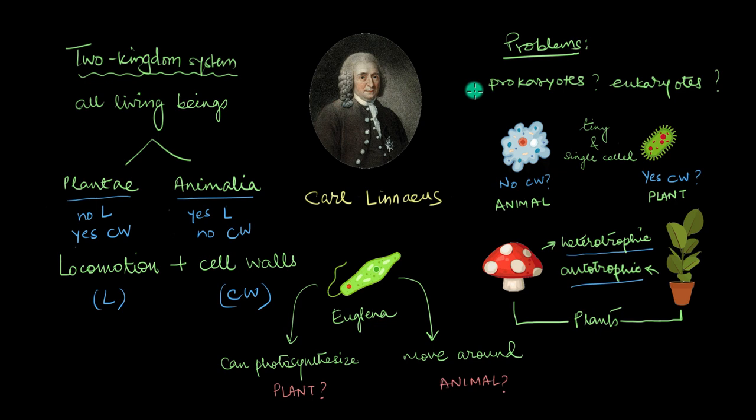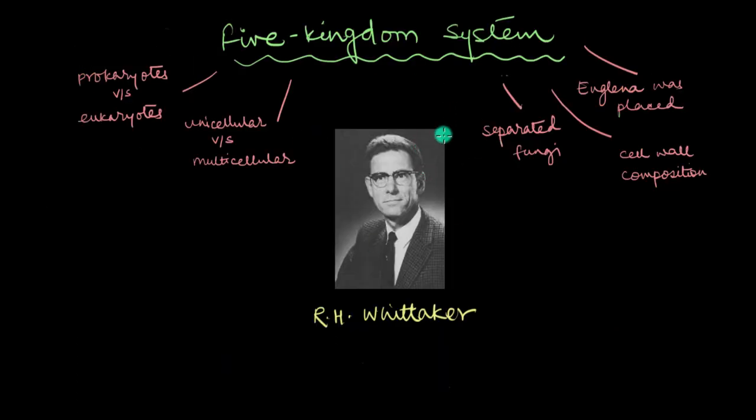So that's why sometime in the 1960s, American ecologist R.H. Whittaker came up with a system that addressed most of these problems. His classification system differentiated between prokaryotes and eukaryotes and also between unicellular and multicellular organisms. It further took nutrition into consideration and rightfully gave fungi a group of their own. Even Euglena found its home in a new kingdom.